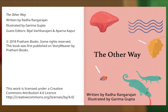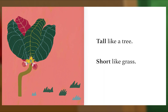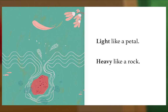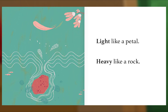Tall like a tree. Short like grass. Up in the sky is a cloud. Down in the soil is an earthworm. Light like a petal. Heavy like a rock. Over the leaf is a caterpillar. Under the leaf is a dragonfly.